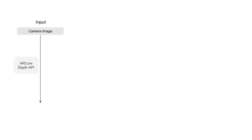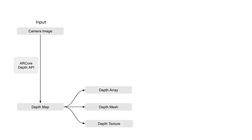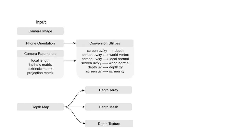For each camera image, we compute a raw depth map and generate the depth array, depth mesh, and depth texture data structures for different use cases. We offer a set of conversion utilities to improve a developer's workflow and switch between the screen space and world space representations.